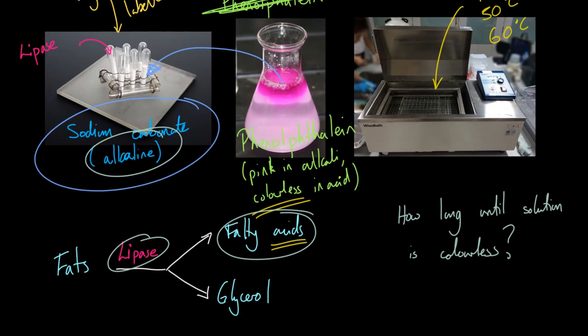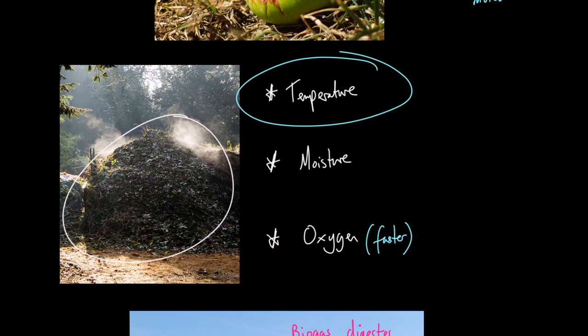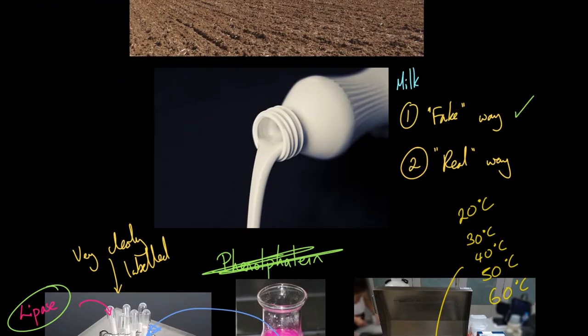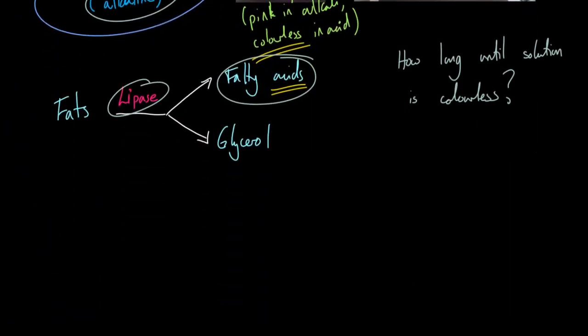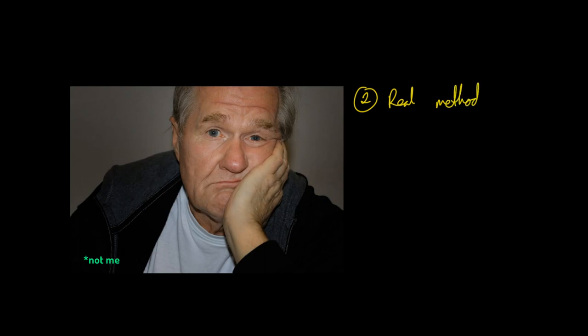The reason lipase takes so long at high temperatures is because you've broken it — you've denatured it. It prefers working at a particular temperature. Going back to the real-world link: for your compost heap to work well, you need to keep it warm but not too warm, so enzymes work quickly without denaturing. Same with the biogas digester. That's the fake way — it's fake because it has absolutely nothing to do with actual decay.